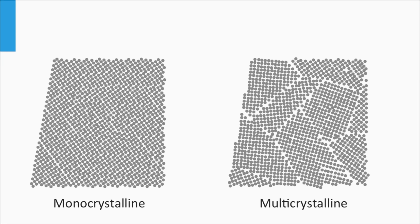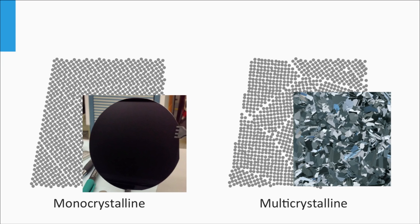Monocrystalline silicon and multicrystalline silicon, also called polycrystalline silicon, are the two types. Monocrystalline silicon, also called single crystalline, is a crystalline solid in which the crystal lattice is continuous and unbroken without grain boundaries over the entire solid up to the edges. In contrast, polycrystalline silicon, often abbreviated as polysilicon, consists of many small crystalline grains with random orientations. Here you see pictures of monocrystalline and multicrystalline wafers — monocrystalline has one uniform color, whereas in multicrystalline silicon the various grains are clearly visible to the human eye.